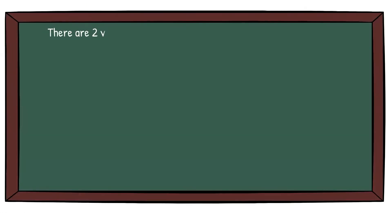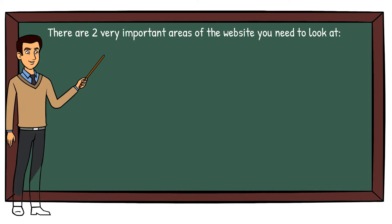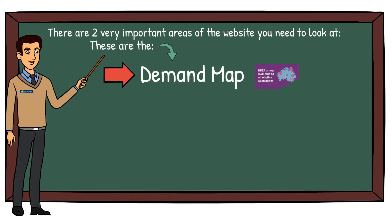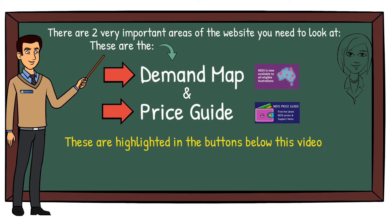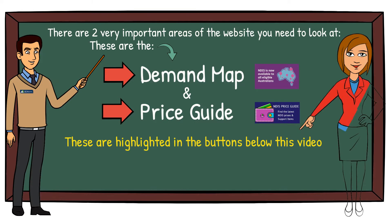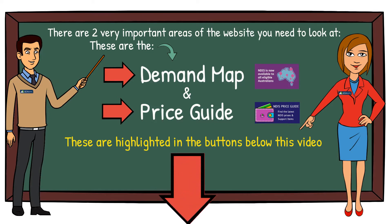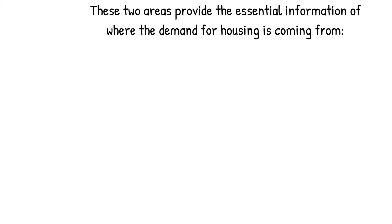There are two very important areas of the website you need to look at. These are the Demand Map and Price Guide, highlighted in the buttons below this video. Please click on them after this short presentation. These two areas provide the essential information of where the demand for housing is coming from.